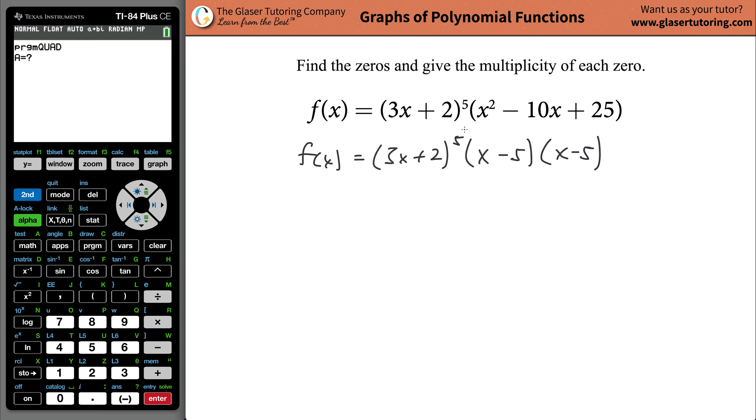If you know the a value, remember the a value is the coefficient of the x squared, which is 1. So you plug in 1, hit enter, then you go to the b value, which is negative 10. And then hit enter and then go to your c value of 25, positive 25. Hit enter again. And look, it gives you now the values of your zeros, positive five and positive five.